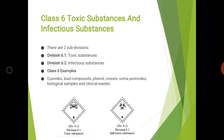The next category is class 6, toxic substances and infectious substances, further divided into two divisions: 6.1 toxic substances and 6.2 infectious substances. Examples such as cyanide, lead compounds, and phenol come under class 6. Divisions 6.1 and 6.2 each have their own symbol.